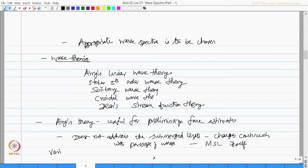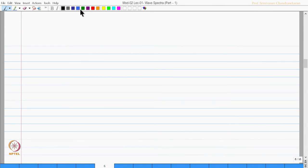This variable submergence effect is generally addressed by stretching modifications, which we briefed in the last lecture. However, literature shows even with stretching modification, linear theory is not adequate to describe the water particle kinematics completely.